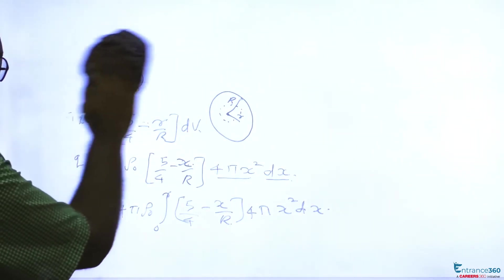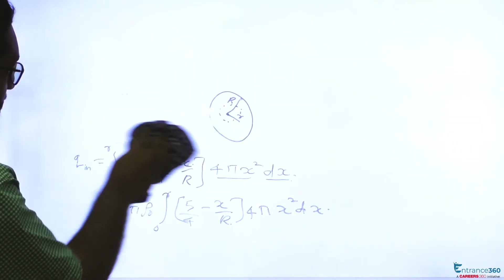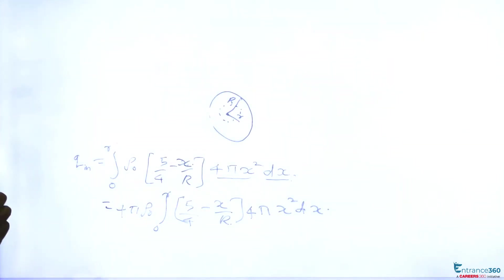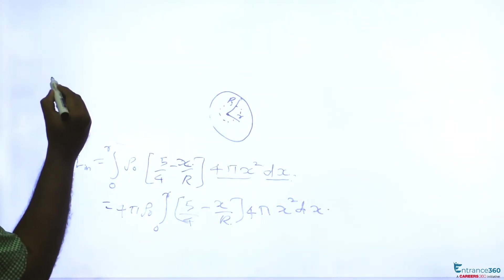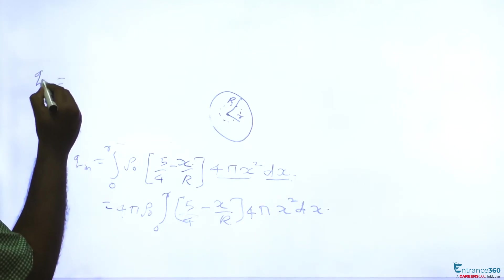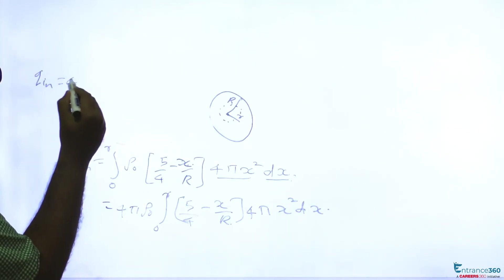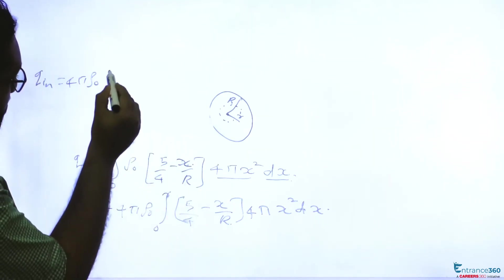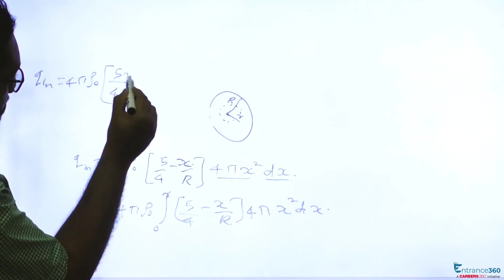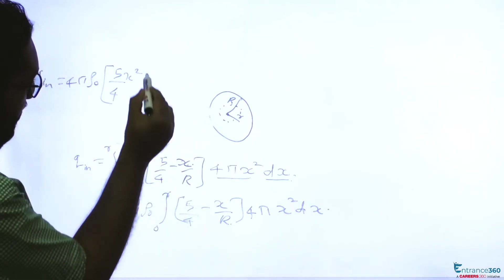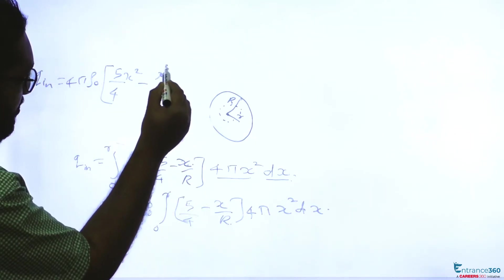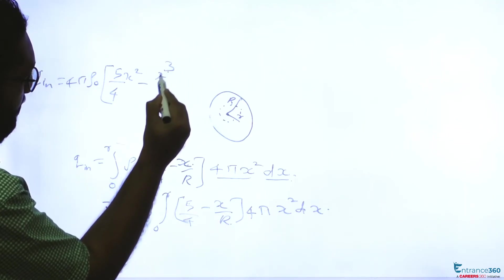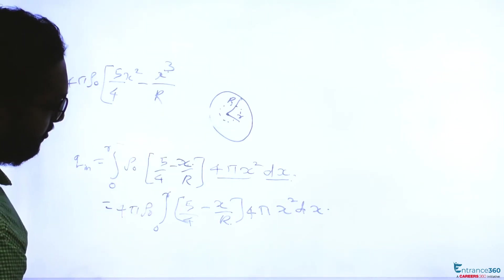So let's see the integration part. We can rewrite it as q_in equals 4πρ₀, taking x² inside: (5/4)x² - x³/R dx.